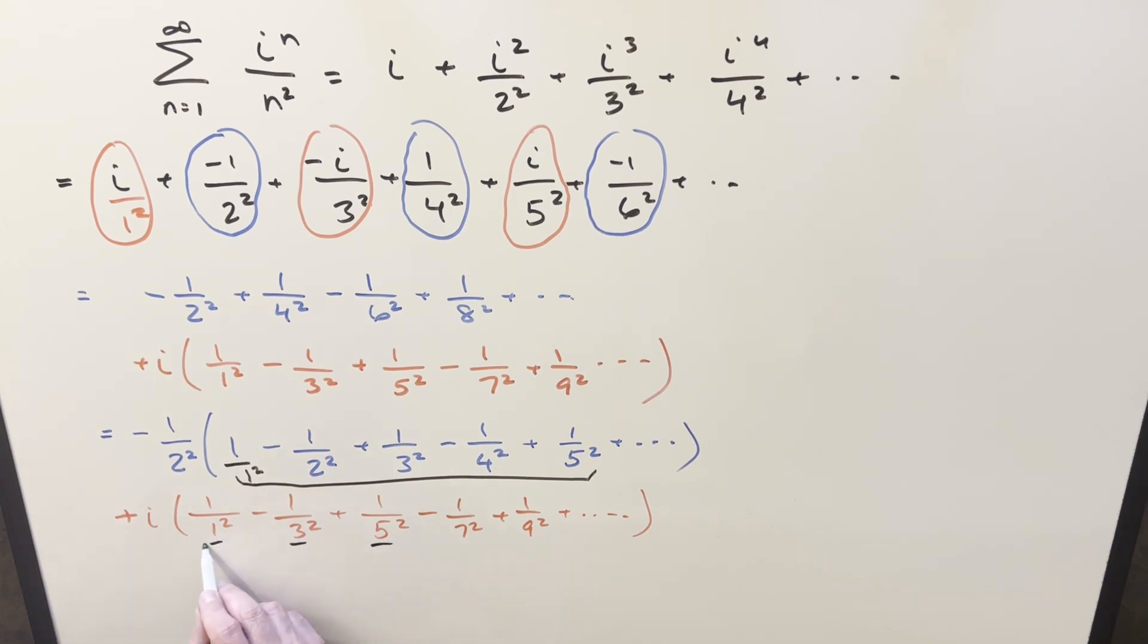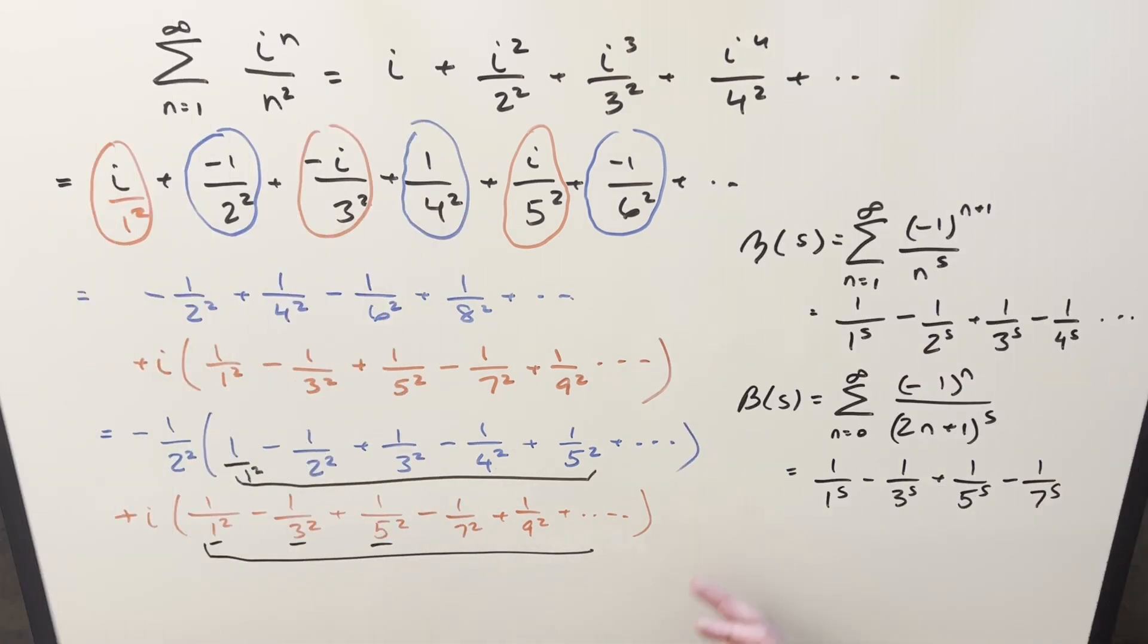And so what we're going to do is we've got two formulas that are going to help us evaluate these two series. Okay, so we have our two formulas over here to the right. The first one, the eta function at s. Just notice that this is in the same form as what we have right here. We've got alternating sign, 1, 2, 3, 4, 5, 6. And the only thing to notice here is the exponent here on everything is squared, where here everything is s.